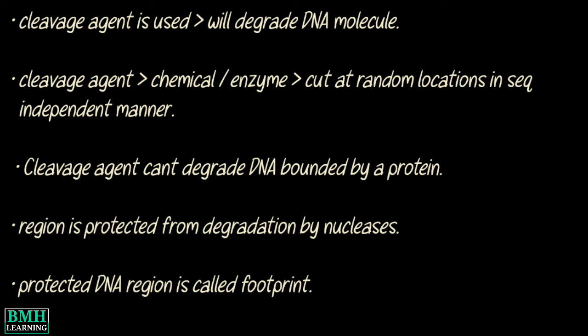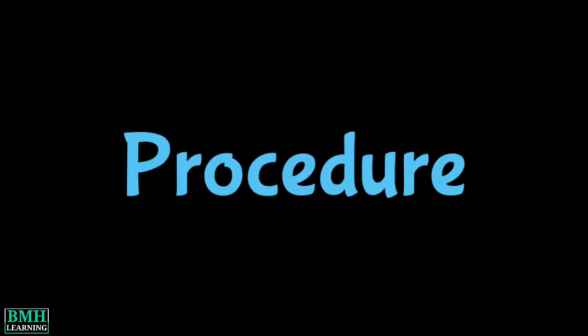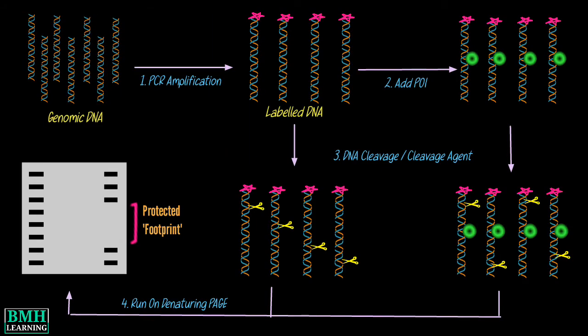This protected DNA region is called the footprint. The procedure begins with a DNA fragment containing the protein binding sequence being extracted, amplified, and labeled at one end of the double helix using the polymerase chain reaction technique.